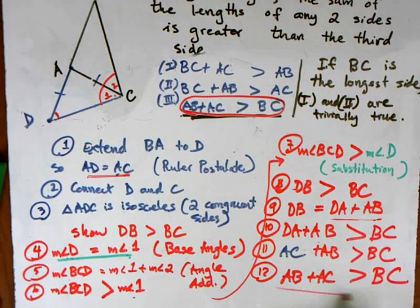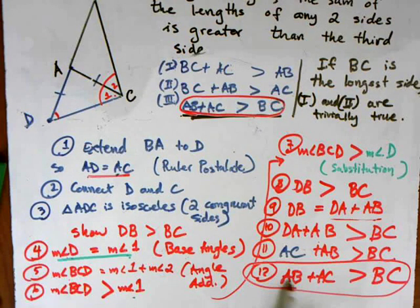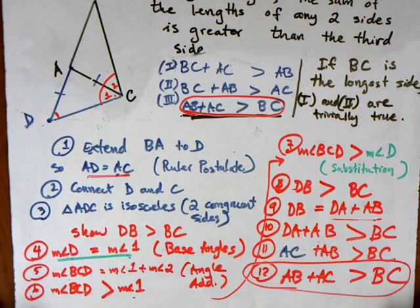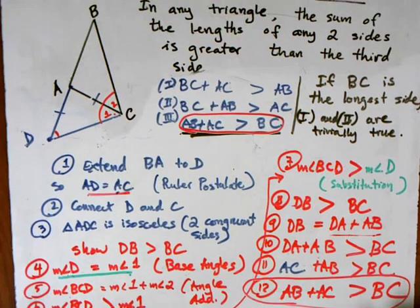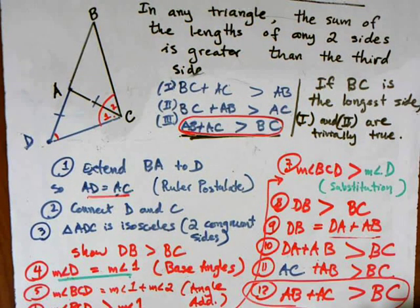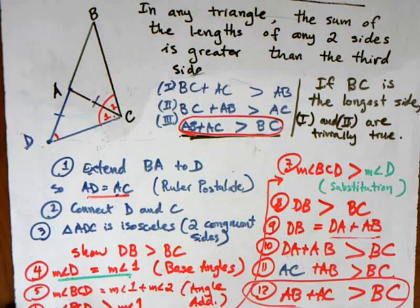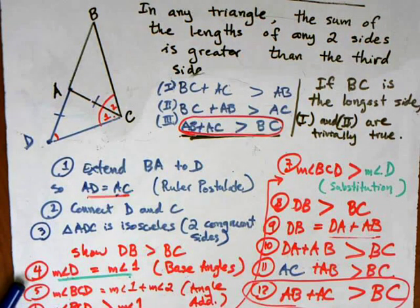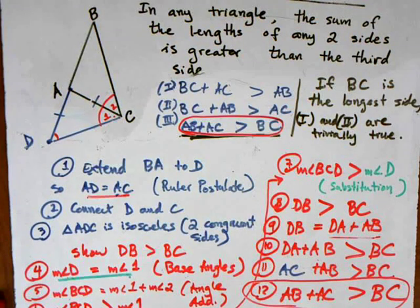And so now I've done it. This is the end of our proof. We have shown that AB plus AC has to be greater than BC, which in the bigger scheme of things shows that if you have a triangle, the two smaller sides always, without exception, have to add up to a length greater than the longest side. This is the proof of the triangle inequality theorem.